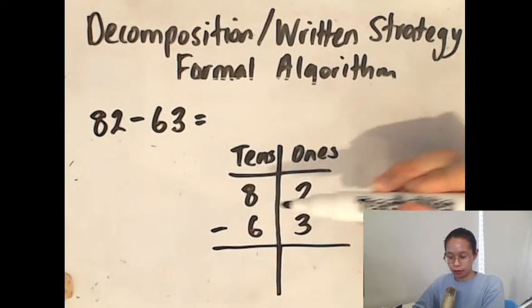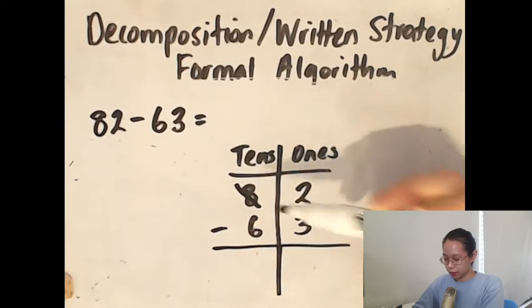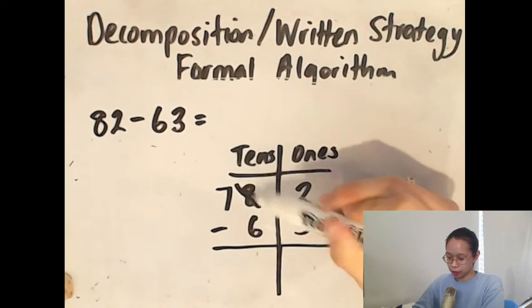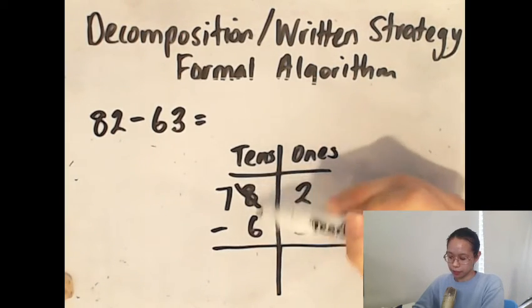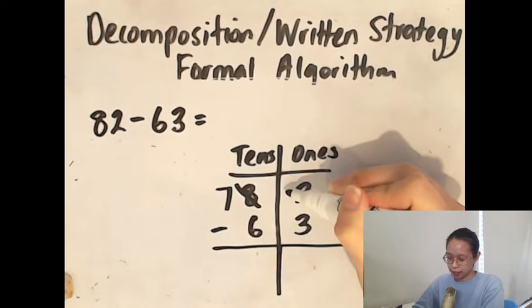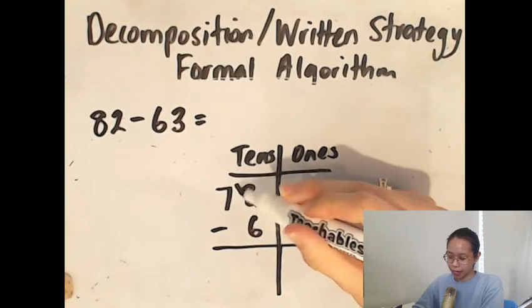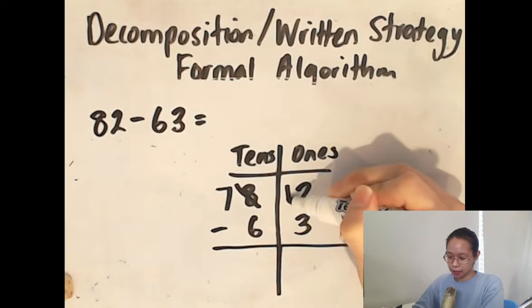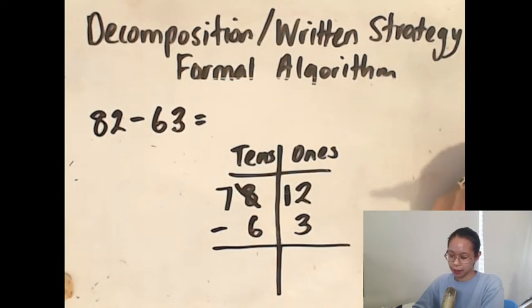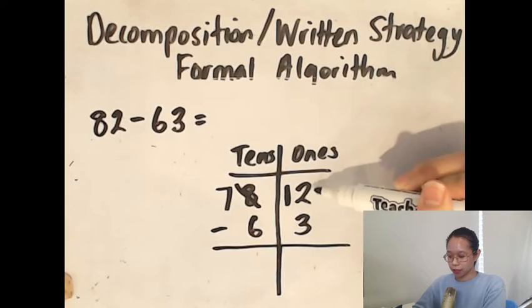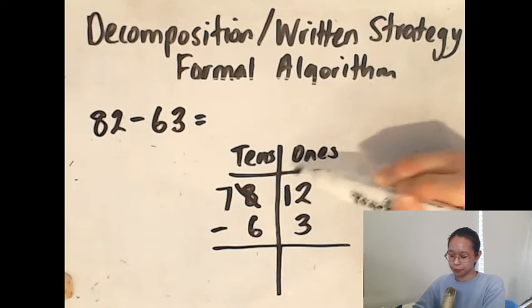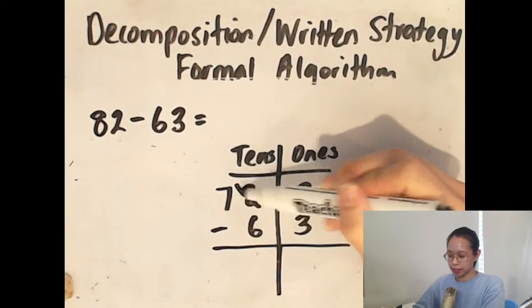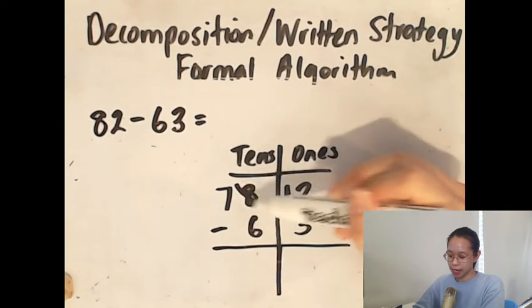over to the tens column and cross that out, make that a 7. We're going to borrow from the tens column. Because we're taking away a 10 out of this column, we're going to add that 10 to the ones column. So this actually becomes a 12. Do you see how I've taken that away from here? It's become a 7 because I've taken away 1 ten and put it into the ones column.